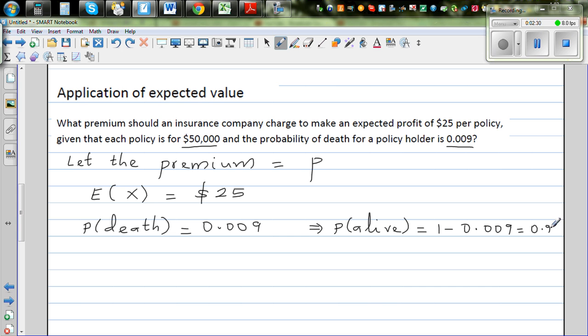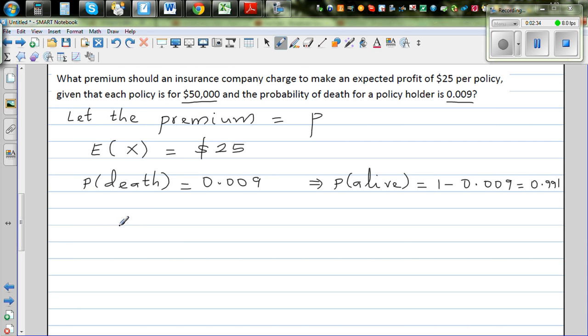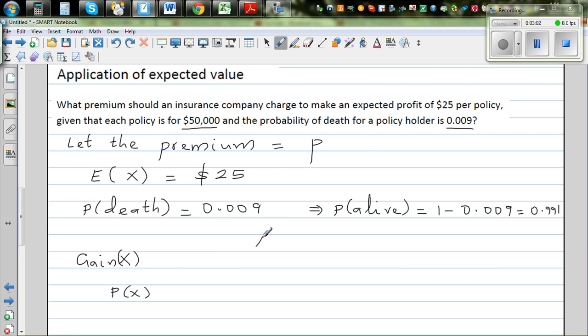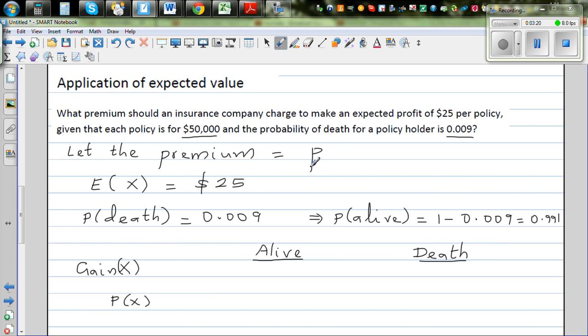So which are the two scenarios? Let's talk about the two scenarios. This is your random variable X and this is the probability of the random variable. X stands for the gain - gain is your random variable. So there are two scenarios for the insurance company: the policy holder is alive or the policy holder dies. There are two scenarios: death and alive.